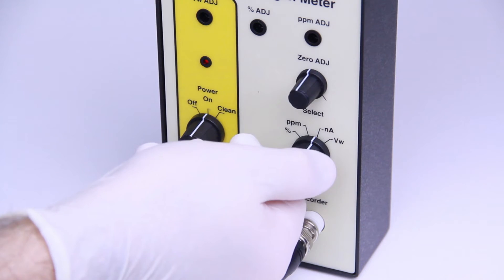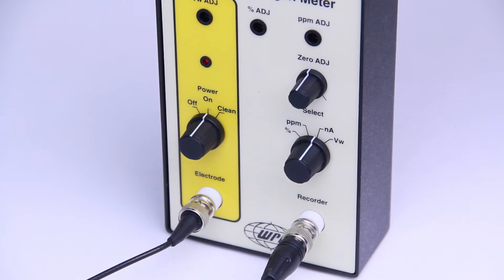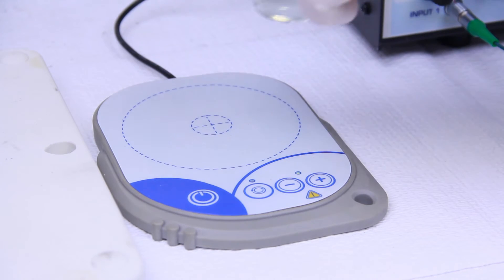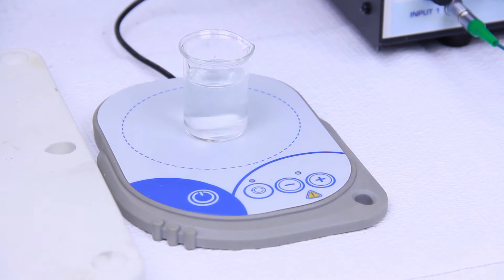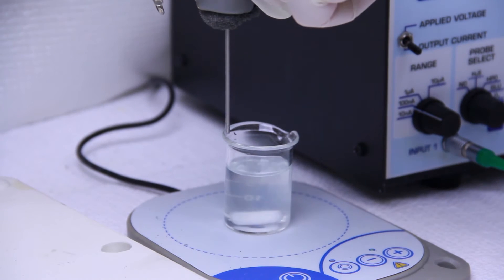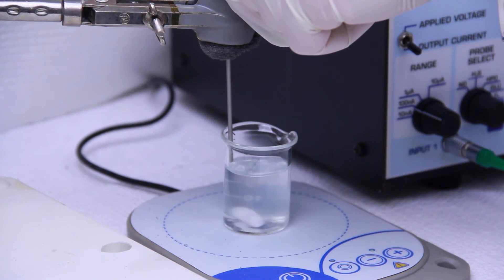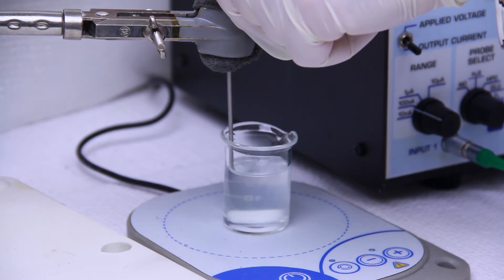Because the sensors are identical, the calibration procedure is the same. Fill a small vial with about 20 milliliters of 0.1 molar PBS solution and place it on a magnetic stirrer, stirring gently. Lower the sensor carefully into the solution to avoid contact with the magnetic stirrer.